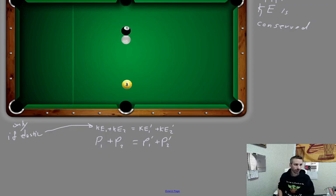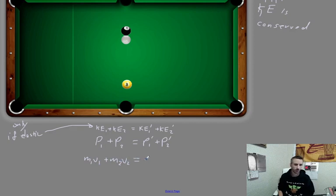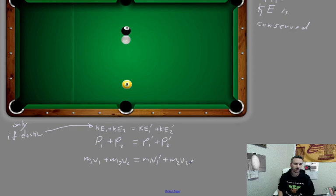Kinetic energy is not conserved in all collisions. Energy is conserved, but not kinetic energy specifically, because that energy can be transformed into thermal energy or potential energy. But in all collisions, momentum is conserved. Since momentum is mv, we have m1v1 plus m2v2 equals m1v1 prime plus m2v2 prime, where the prime symbol goes with the velocity because the mass doesn't change — the velocity does. This is the velocity after the collision.